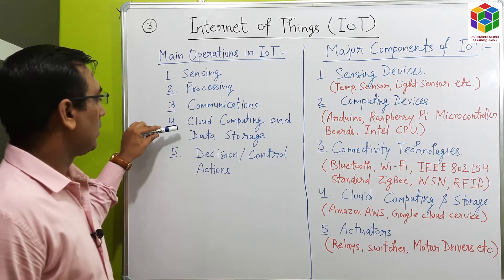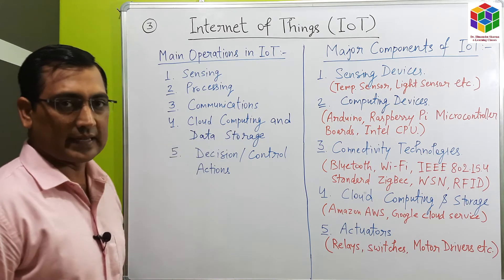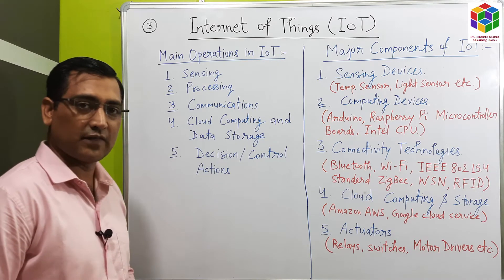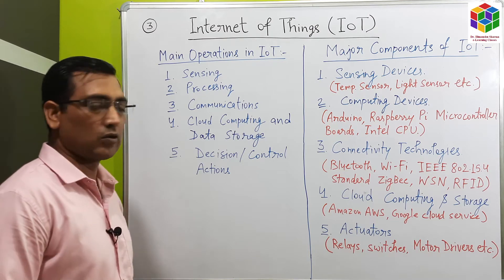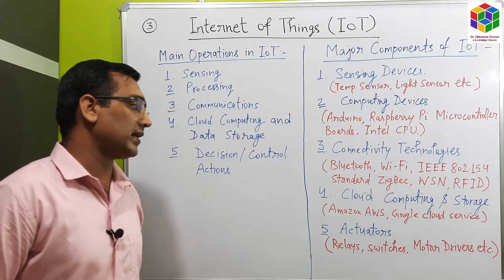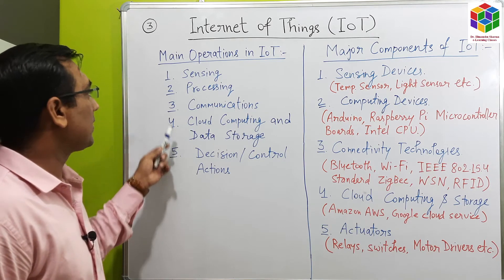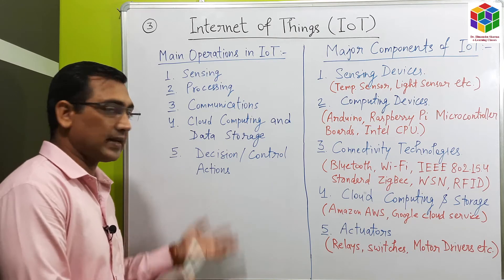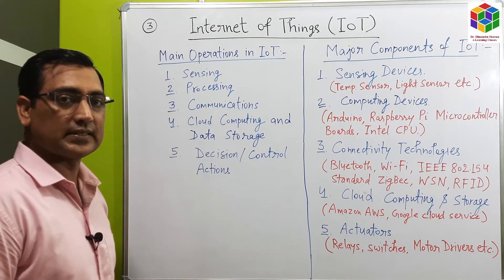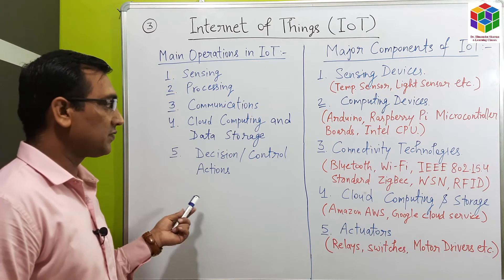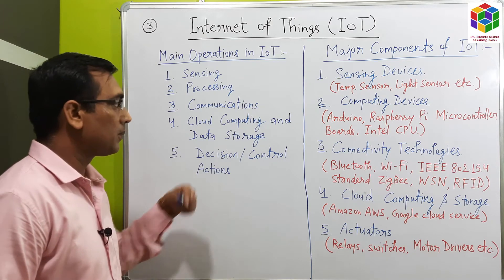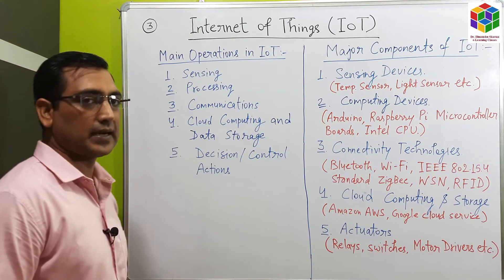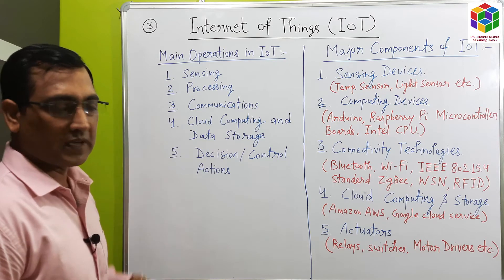Then there is cloud computing and data storage. Cloud computing and data storage is an optional part of IoT. Nowadays, various companies are providing this service — for example, Amazon AWS and Google Cloud Computing. The last step in IoT is decision and control actions. When the data is measured and analyzed, the necessary actions are taken to control any process. As in the example of remote healthcare monitoring, the decision and control actions are taken by the doctor to rectify the health of the patient.